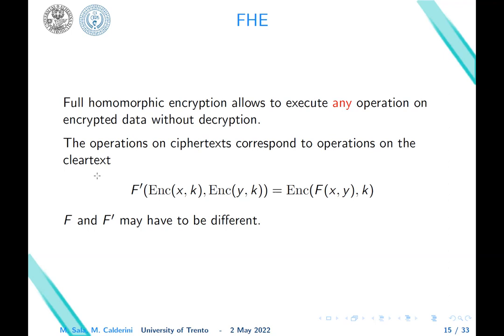We start from full homomorphic encryption. It allows to execute any operation on encrypted data without decryption. What we mean with that, operations on ciphertext correspond to operations on the plaintext. So if you apply function F' to the encryption of X and the encryption of Y, it will be the encryption of a function F applied to X and Y. Of course, F and F' may have to be different depending on the scheme.